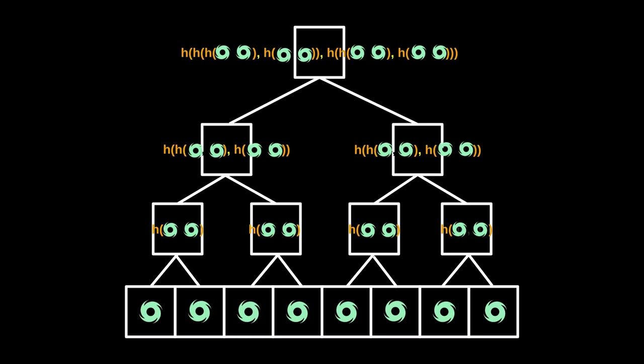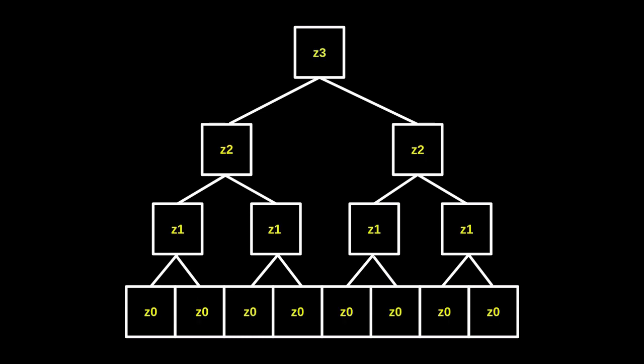In Tornado Cash, the Merkle Tree is initialized with each leaf being a Keccak256 hash of the string 'Tornado'. To show how insertion works, we'll relabel these hashes: the very bottom hash is Z0, the next level is all Z1, the next level is Z2, and since the tree has three levels, we'll refer to the Merkle root as Z3. This is level 0, this is level 1, this is level 2, and this is level 3.